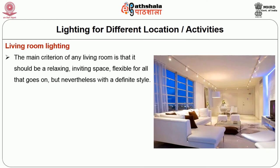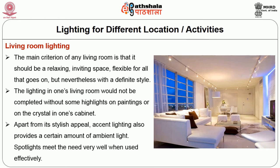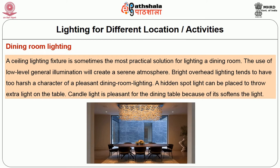Living room lighting: The main criteria is that it should be a relaxing, inviting space, flexible for all activities, but with a definite style. Highlights on paintings or on crystal in a cabinet complete the living room lighting. Accent lighting provides a certain amount of ambient light, and spotlights meet this need very well when used effectively. Dining room lighting: a ceiling lighting fixture is often the most practical solution. Low-level general illumination creates a serene atmosphere, as bright overhead lighting tends to be too harsh. A hidden spotlight can throw extra light on the table. Candlelight is pleasant for dining because it softens the light.